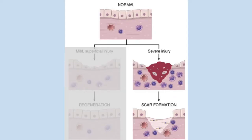If repair cannot be accomplished by regeneration alone, it will occur by replacement of the injured cells with connective tissue, leading to the formation of a scar, or by a combination of regeneration of some residual cells as well as scar formation. Scarring may happen if the tissue injury is severe or chronic, resulting in damage to the parenchymal cells, epithelia, and the connective tissue framework, or if non-dividing cells are injured. The term scar is most often used in connection to wound healing in the skin, but it can also describe the replacement of parenchymal cells in any tissue by collagen, like in the heart after a myocardial infarction.